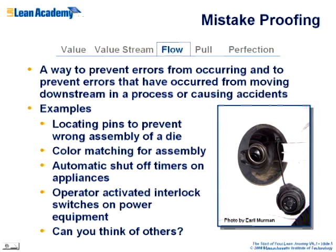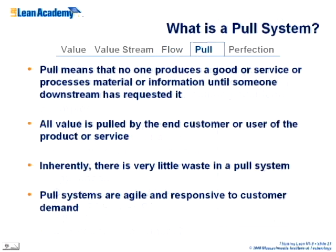Another lean tool is mistake proofing — enabling flow by eliminating mistakes. Mistake proofing means designing things so it's impossible to make a mistake. Mistakes happen, but if you design them out of the process, you prevent defects from propagating.